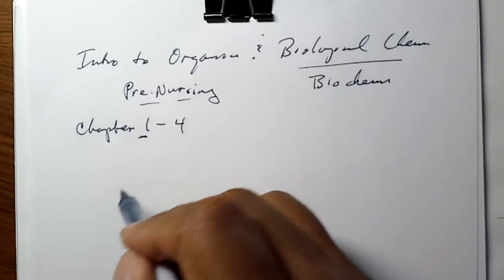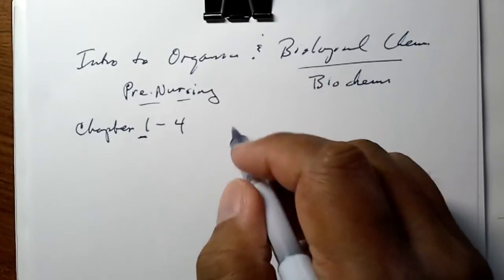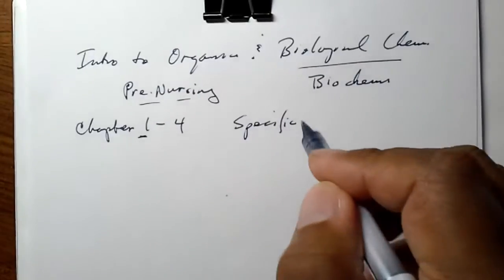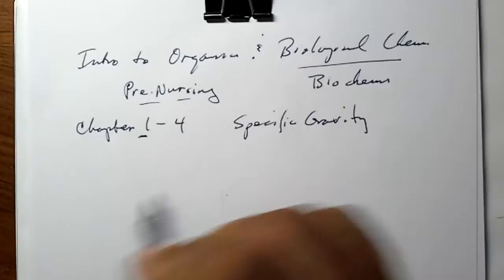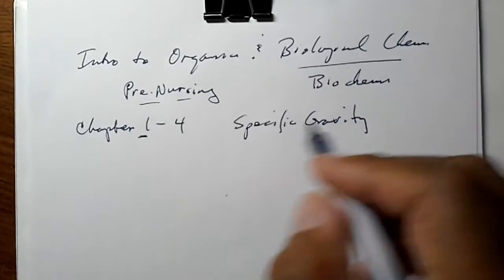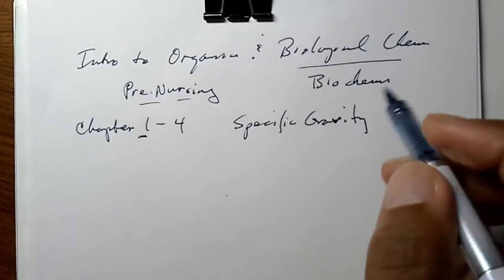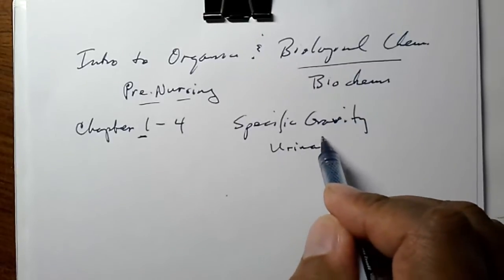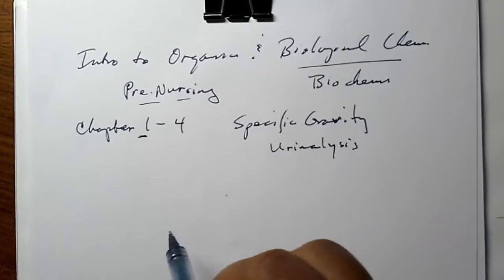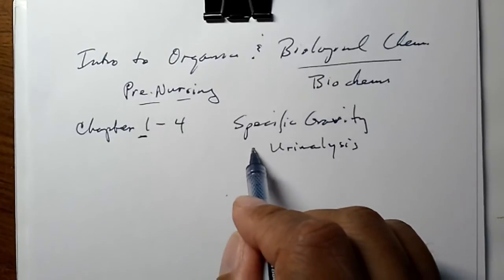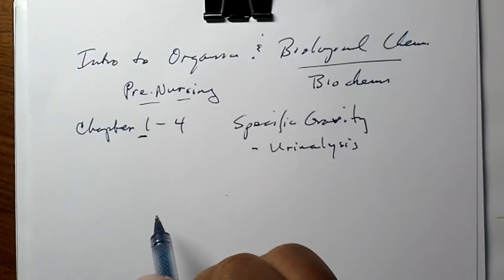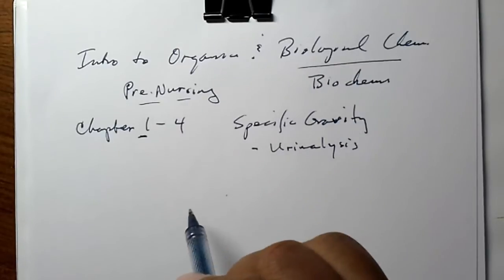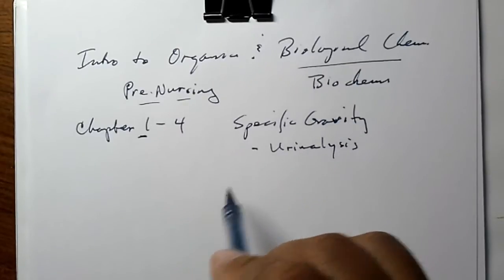Chapter 1 is really about specific gravity, and that's where I'll begin, because this is important to know, especially in the clinic. Quite a number of diseases can be determined by measuring or knowing the specific gravity of the urine.